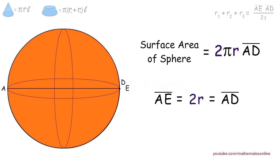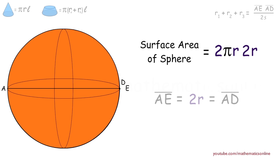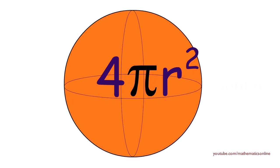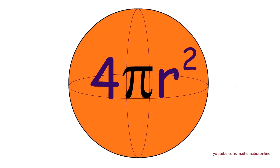Finally, the surface area of the sphere is equal to 2π·R times 2R, which simplifies to 4πR². Therefore, 4πR² gives you the surface area of any sized sphere that exists.